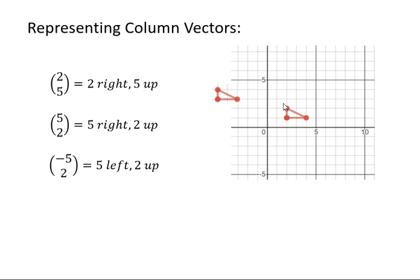Then two up. So this transformation, this column vector should be minus seven, two. So it should look like this instead.